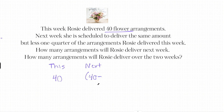One quarter of 40 — if I divide 40 by 4 — is 10. So how many arrangements will Rosie deliver next week? It's going to be 40 minus 10, which is 30. She delivered one quarter less, that's why I subtracted the 10. And how many arrangements will Rosie deliver over the two weeks? 40 plus 30 gives us 70.